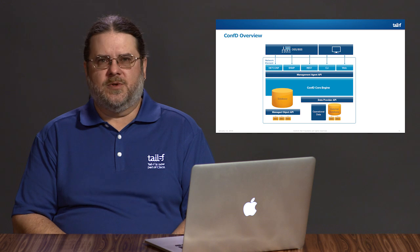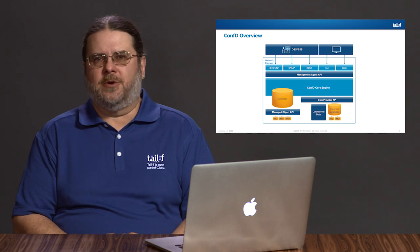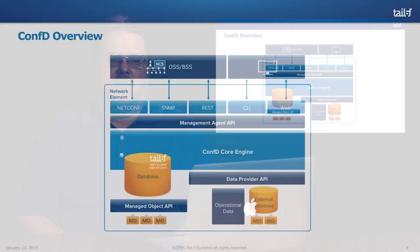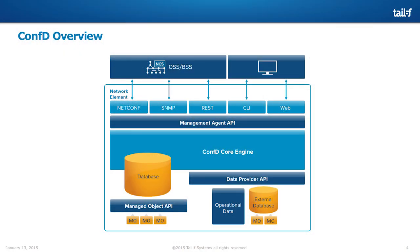So, we'll start with what I call the 50,000 foot view of ConfD. At the center is the core engine — this is really the heart of ConfD. This is where we'll end up seeing transactions, AAA support, validation, etc., with much more detail on a later slide.